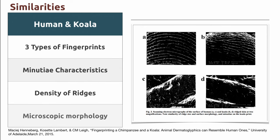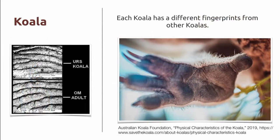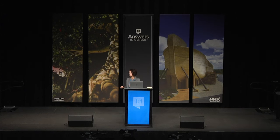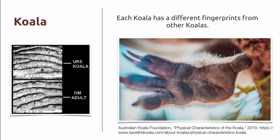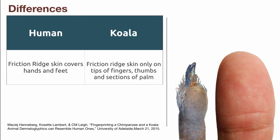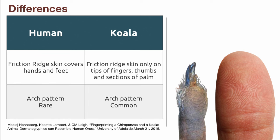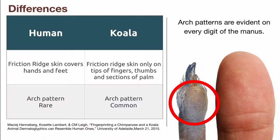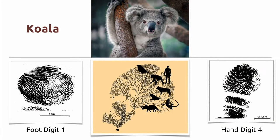There are some similarities between humans and koalas: they share the three types of fingerprint patterns just as primates do, they do have minutiae characteristics, they share that density of ridges — humans are about 11 ridges per centimeter and koalas are about 12 — and they have almost the same microscopic structure as humans. In the density of ridge analysis, the koala's was about 12.3 versus human at 11 — almost identical to the point you would not be able to tell them apart. Each koala does have distinctly different fingerprint patterns from any other koala. One of the main differences we see between koala and human though is that they do not have friction ridge skin on their entire palmar area — only on the tips of fingers, thumbs, and small sections of the palm.